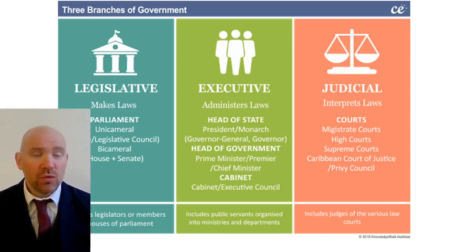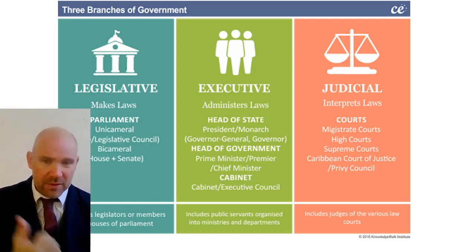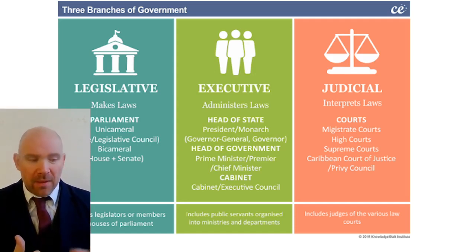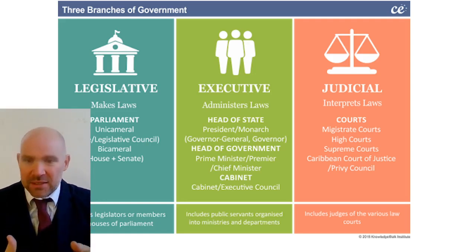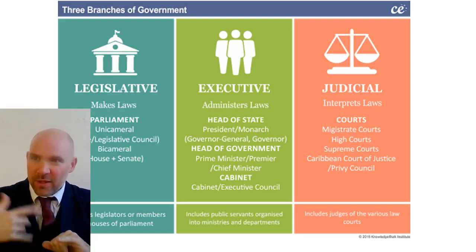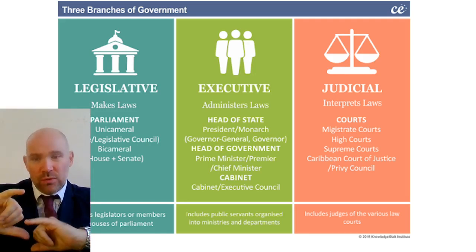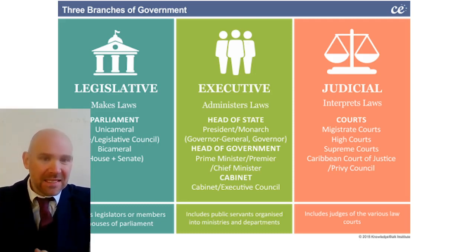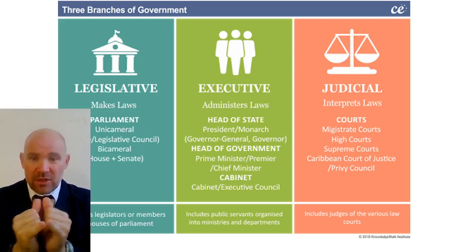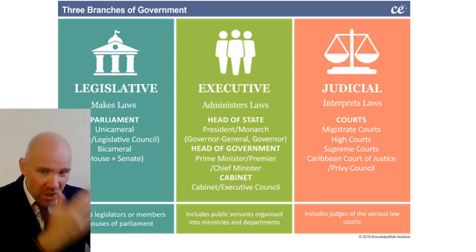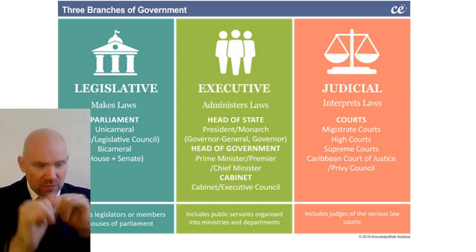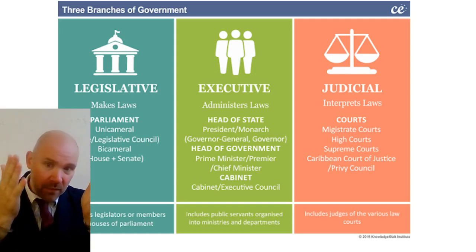The other thing the judiciary might do is decide if two laws seem to be incompatible. For example, if the Human Rights Act says people are entitled to a fair trial, but the government acts in a way that conflicts with that, the judiciary has to decide whether these two laws or actions work together. Sometimes they will make something called a declaration of incompatibility. So the judiciary's role is interpreting laws: is that legal, is that not legal, do these two laws conflict?